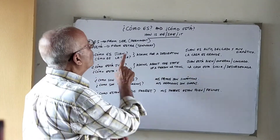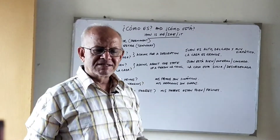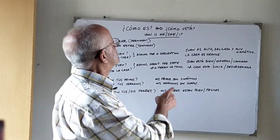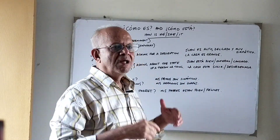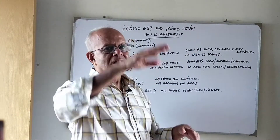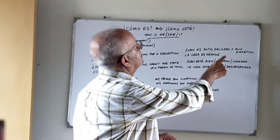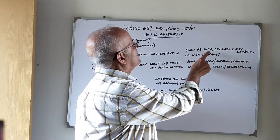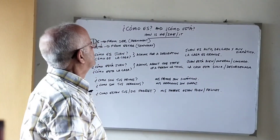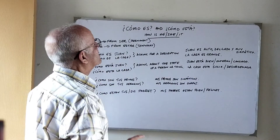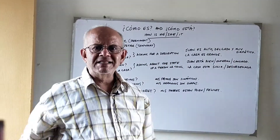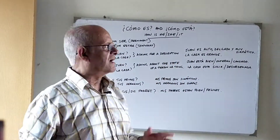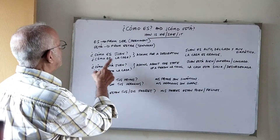Now how do we answer these? Cómo es Juan? — this is asking 'What is Juan like? What are the characteristics of Juan?' So we answer with a description: Juan es alto, delgado y muy simpático — Juan is tall, thin and very kind. Regarding the house, Cómo es la casa? — La casa es grande — the house is big. This is a characteristic of the house.